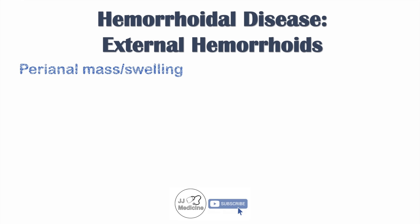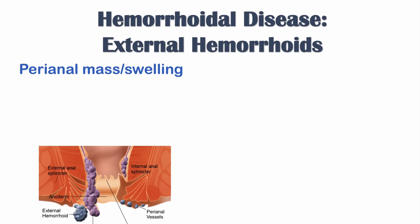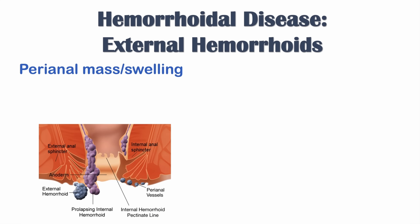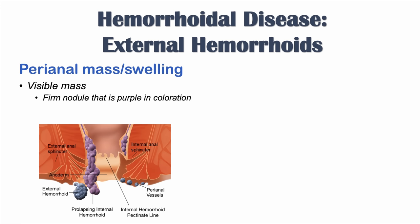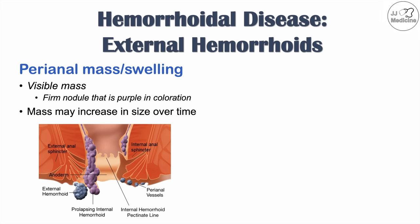Now let's talk about external hemorrhoids. One of the first things we note is a perianal mass or swelling. Because the external hemorrhoid is below the dentate line, we're more likely to see it as a visible mass — a firm nodule that is purple in coloration. This purple firm nodule can increase in size over time as the external hemorrhoid becomes more problematic.